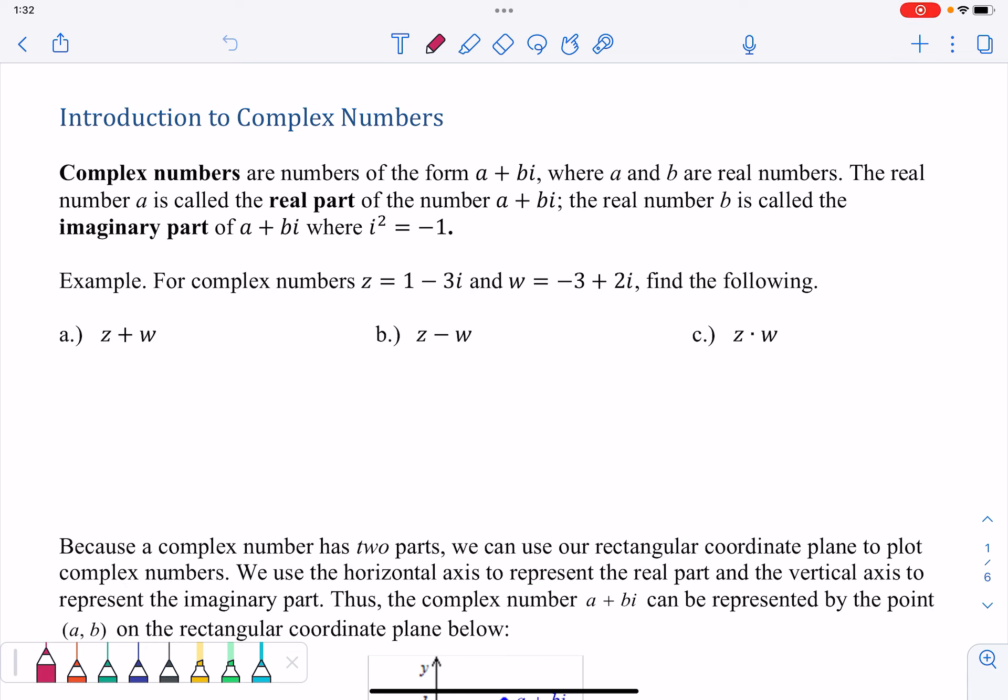Let's take a look at the addition. Z plus W, so first what I'm going to do is just write Z plus W. So all I'm doing is just replacing Z and W with 1 minus 3I and negative 3 plus 2I. And now, when you're first learning, you can do this next step, and you can skip it once you feel more comfortable, but I'm going to add the real parts together. So 1 plus a negative 3, and then add the imaginary parts together, negative 3I plus 2I. And so what that gives me is negative 2 minus I.